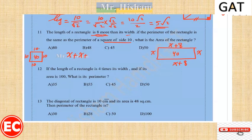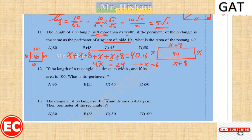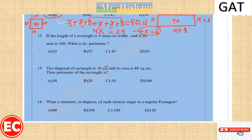The perimeter of the square with side 10 is 40. Adding the sides of the rectangle must also give 40: 4x + 16 = 40, so 4x = 24 and x = 6. The width is 6 and the length is 14, and 6 multiplied by 14 gives an area of 84.